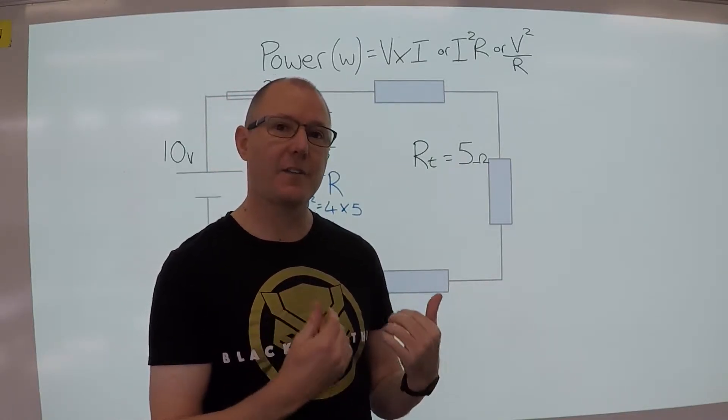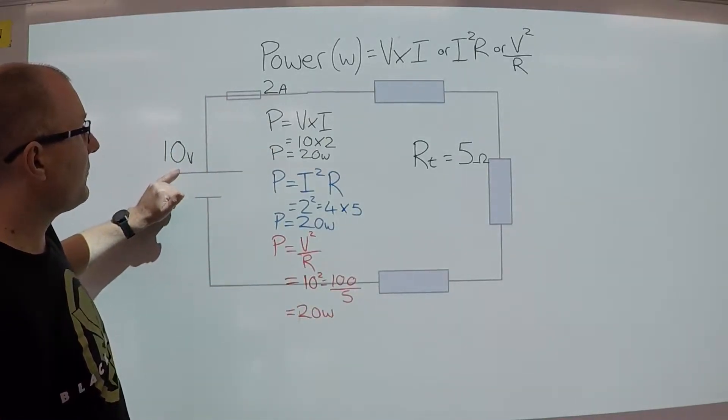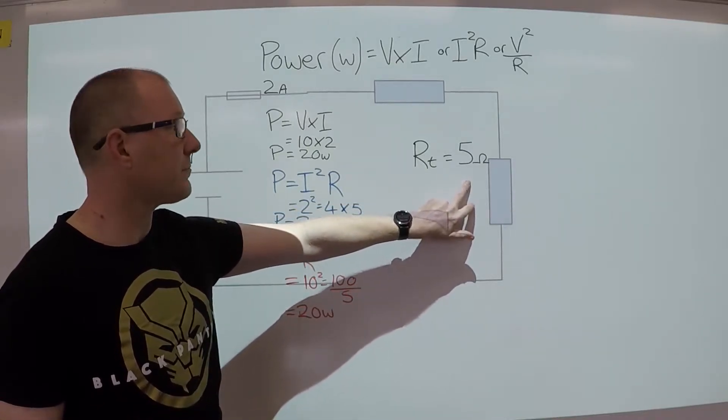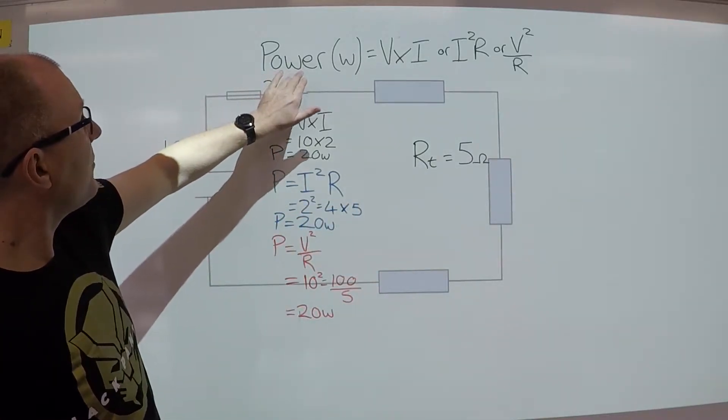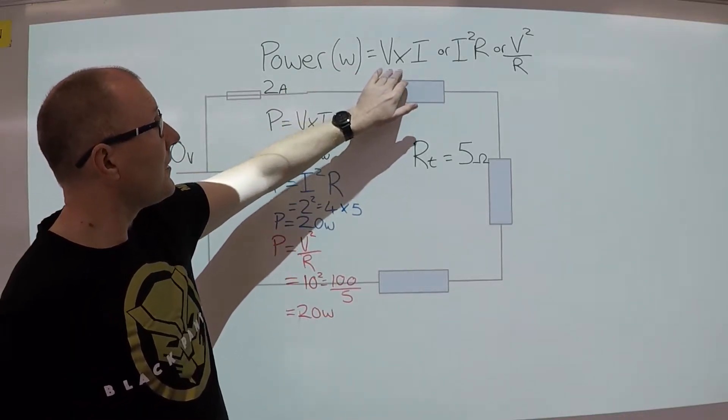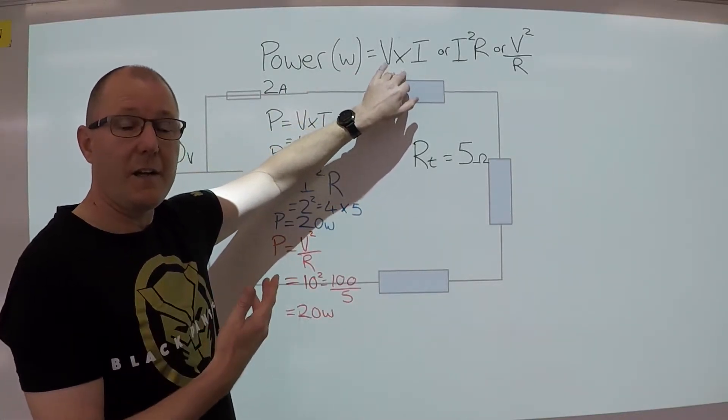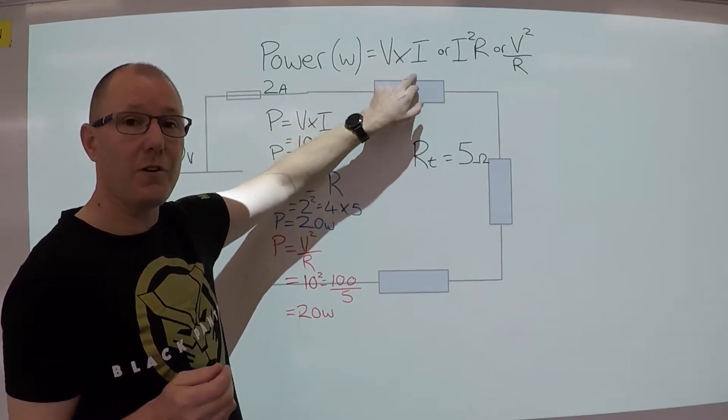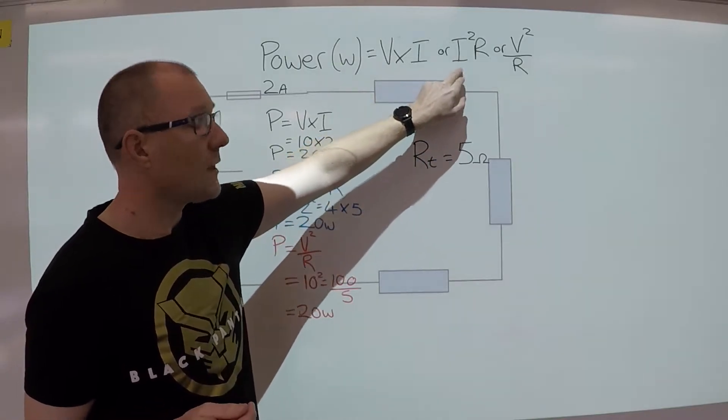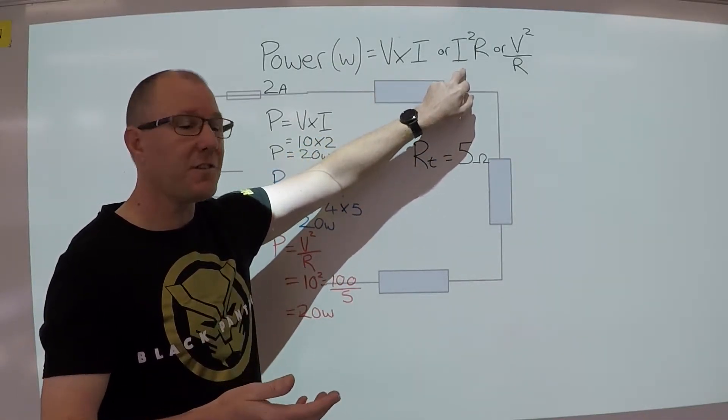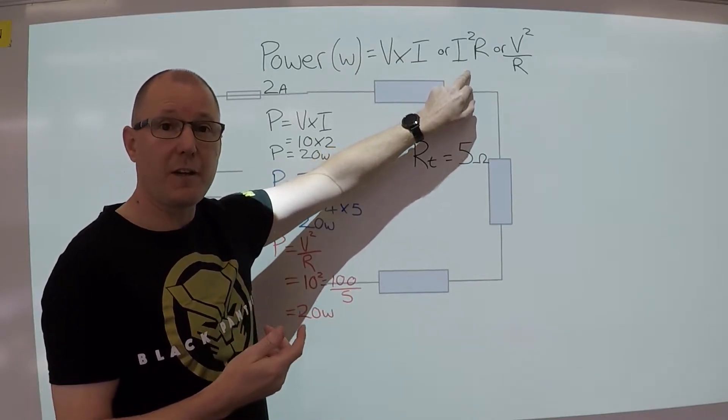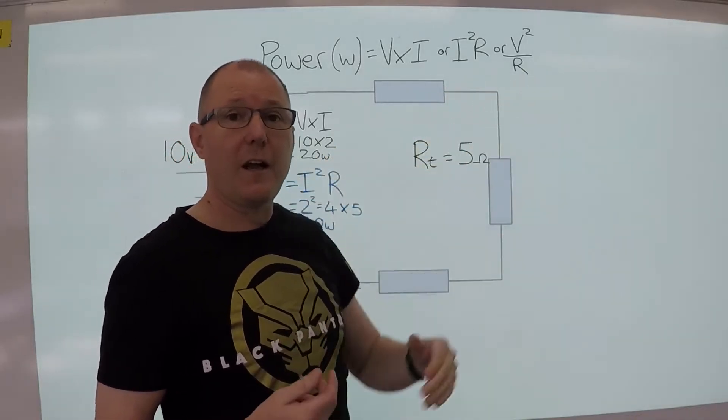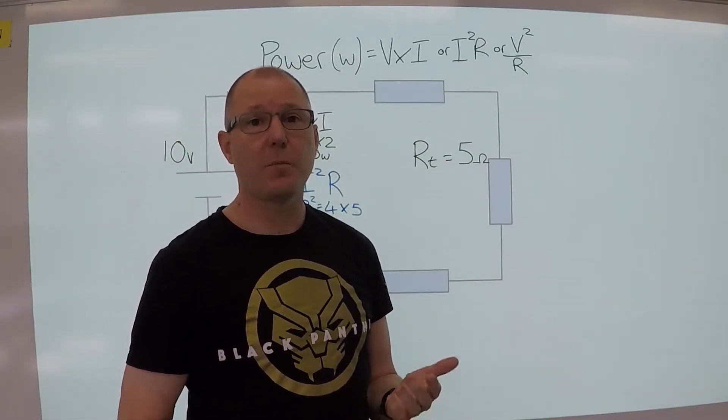So let's have a look at this example. We've got 10 volts, we've got 2 amps, and a total resistance of 5 ohms. So power, which is measured in watts, can be worked out in any of these three combinations. We can have power equals the volts times the current, or if we've got the current and resistance we can work it out by squaring the current and multiplying that by the resistance, or we can have the voltage squared divided by the resistance.